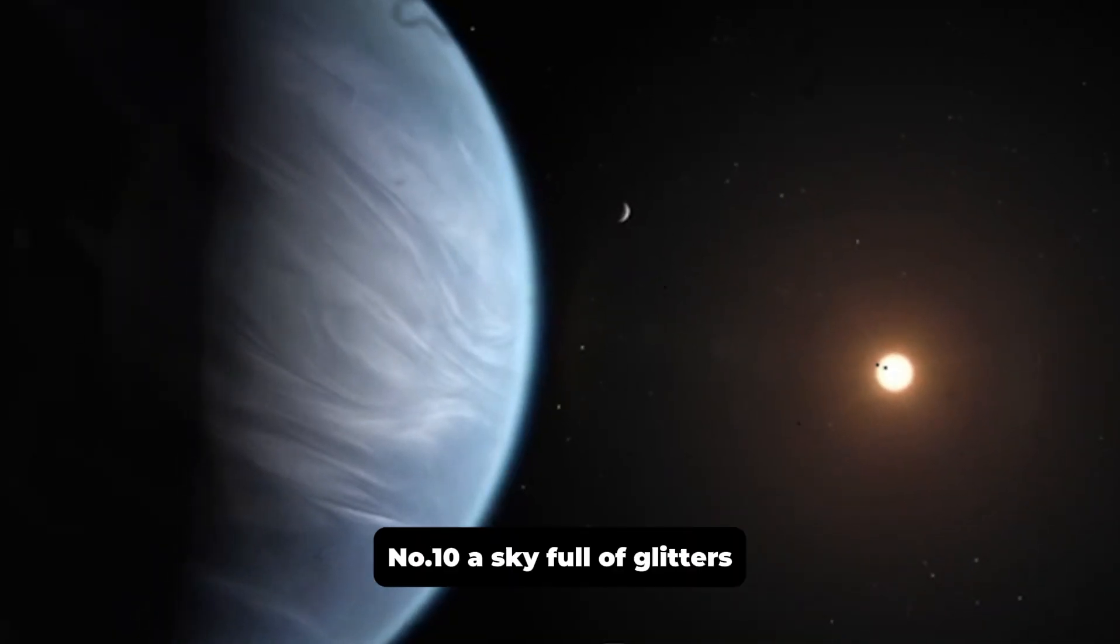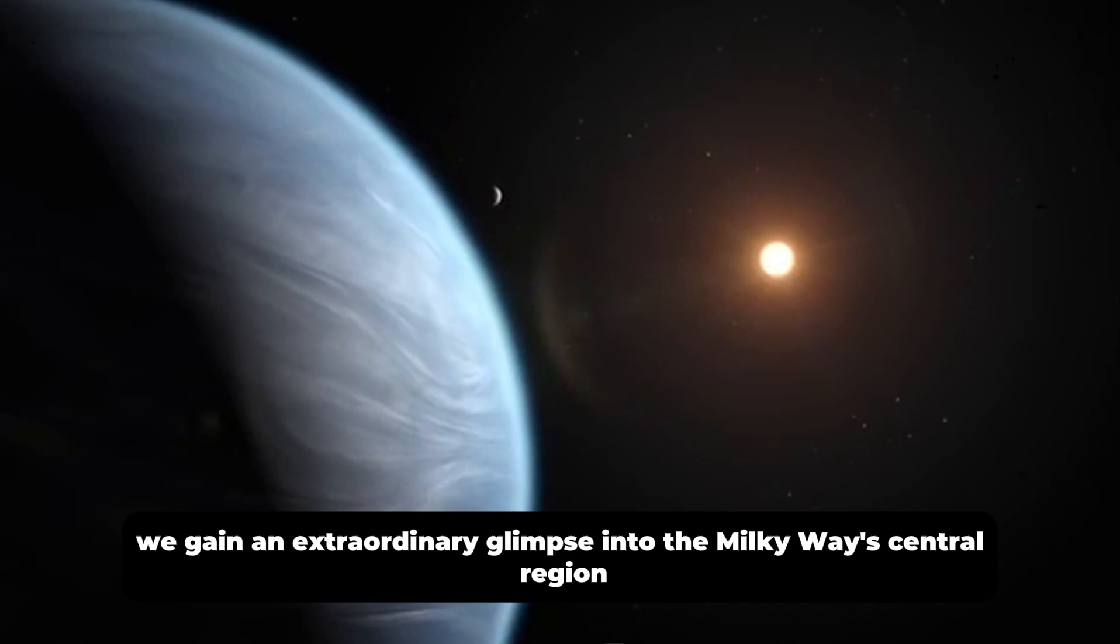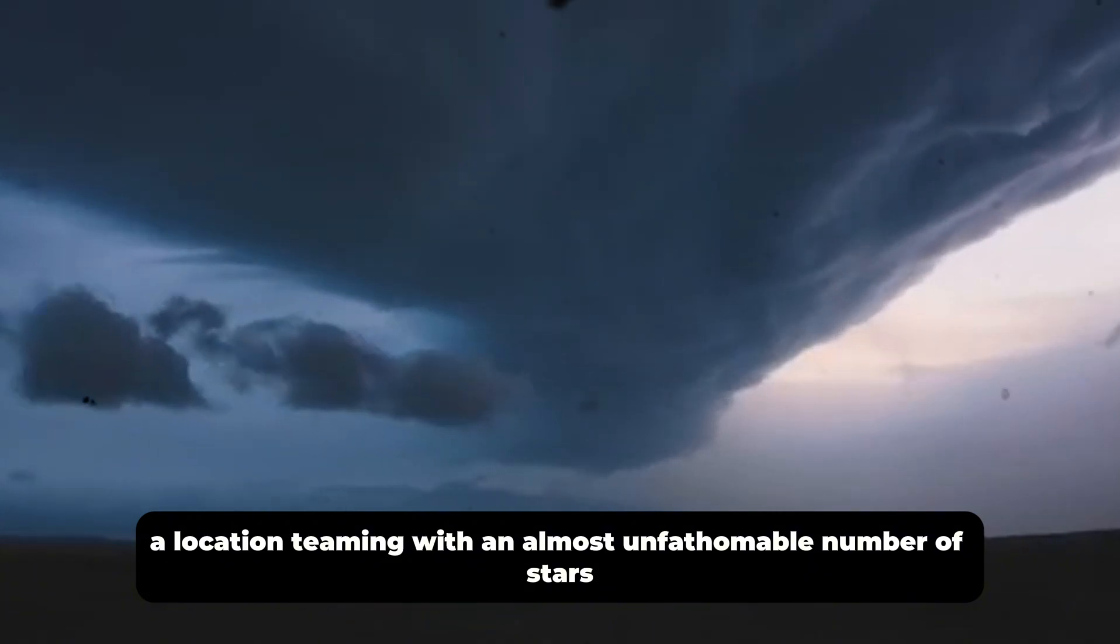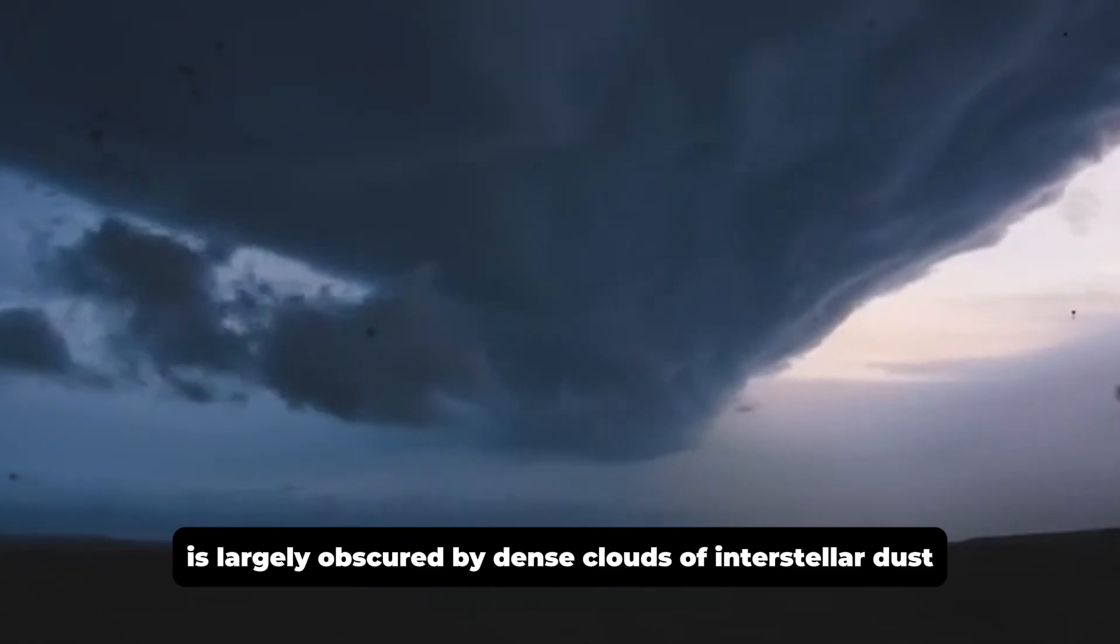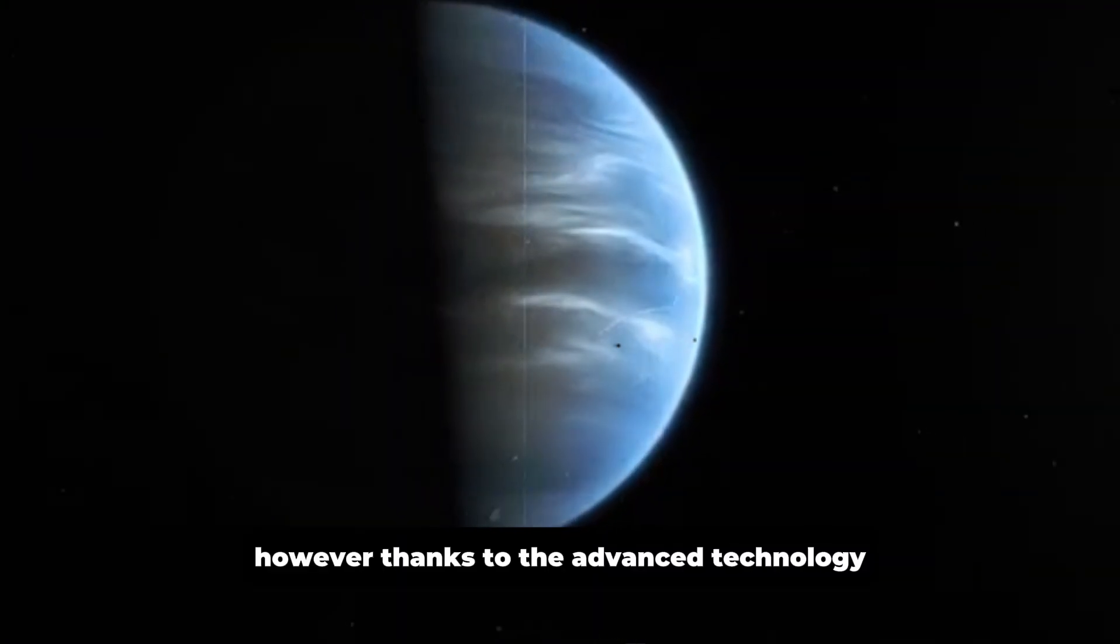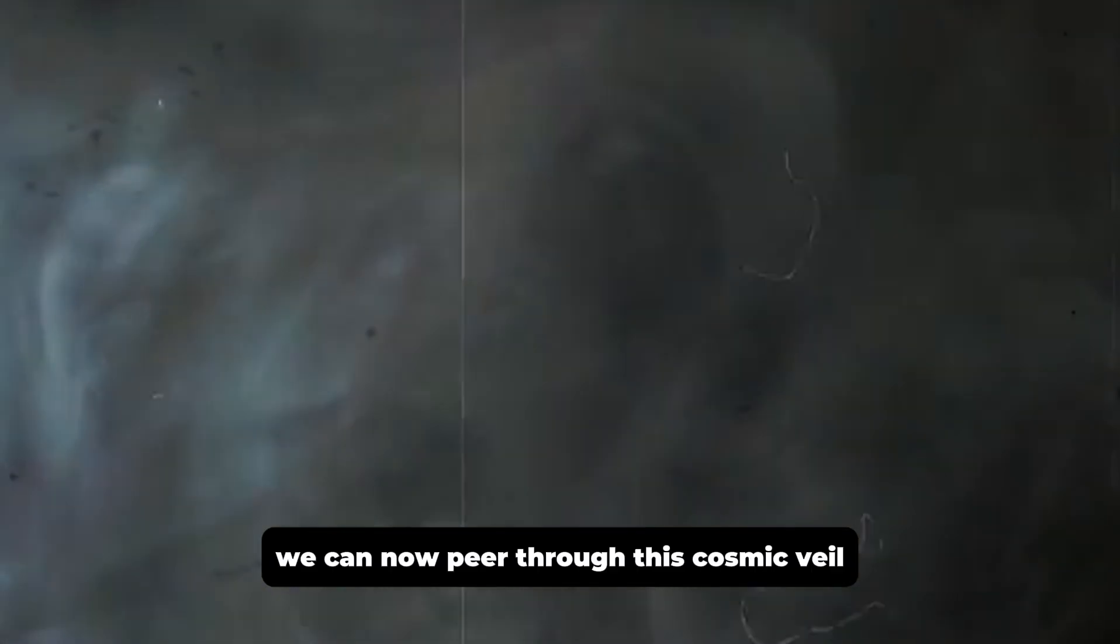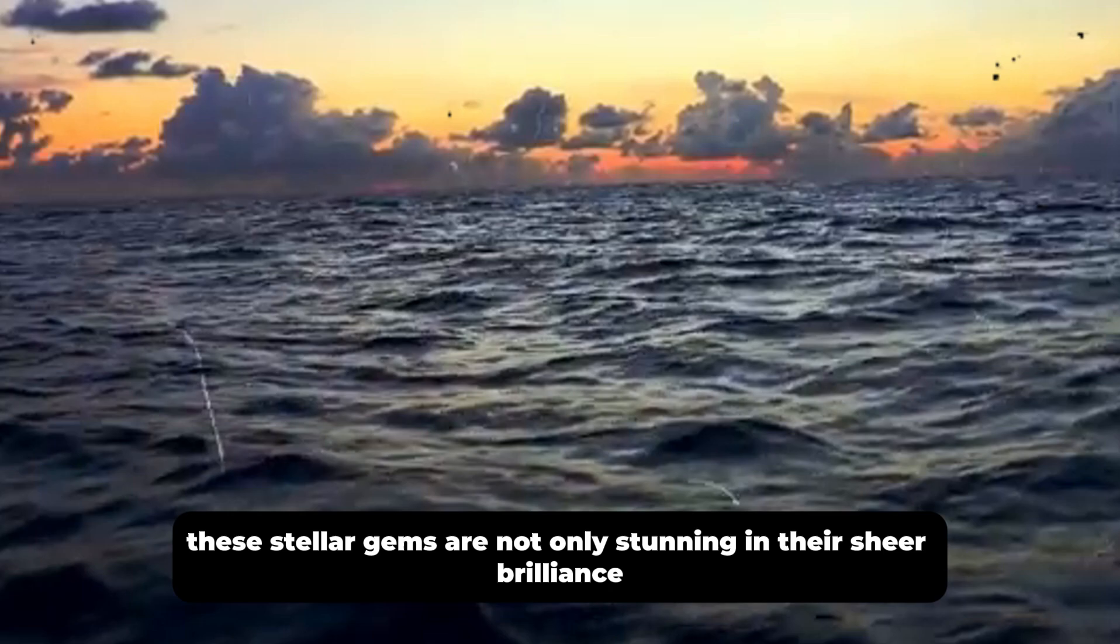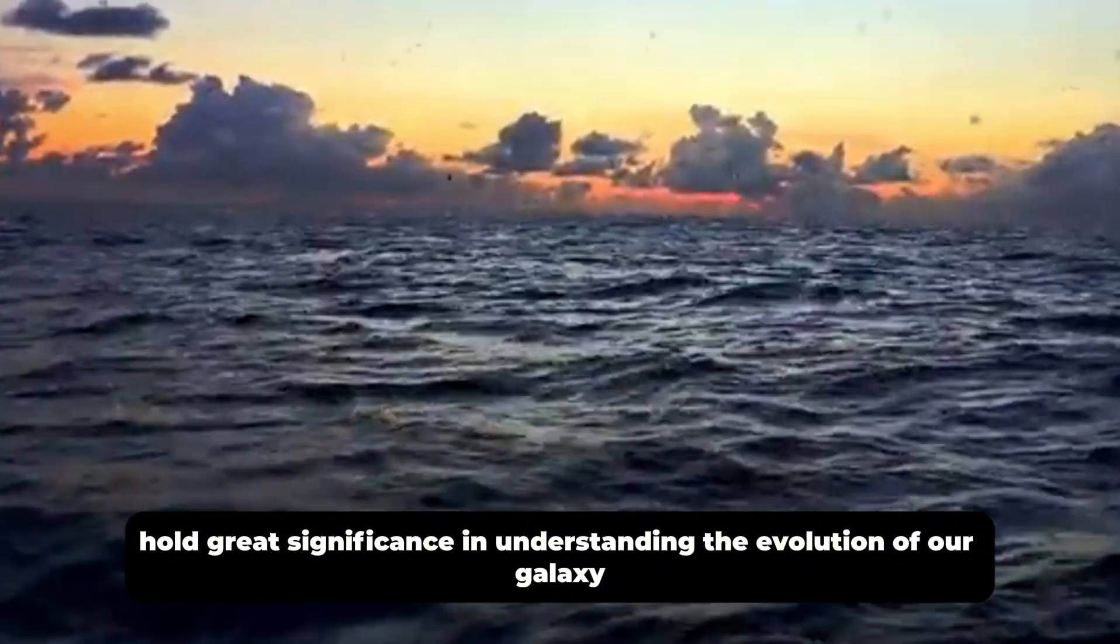Number 10, a sky full of glitters. With the help of the NASA slash ESA James Webb Space Telescope, we gain an extraordinary glimpse into the Milky Way's central region, a location teeming with an almost unfathomable number of stars. This area of our galaxy is largely obscured by dense clouds of interstellar dust, making it invisible to ordinary telescopes. However, thanks to the advanced technology and infrared imaging capabilities of the James Webb Space Telescope, we can now peer through this cosmic veil to reveal a glittering treasure trove of stars. These stellar gems are not only stunning in their sheer brilliance, but also hold great significance in understanding the evolution of our galaxy.